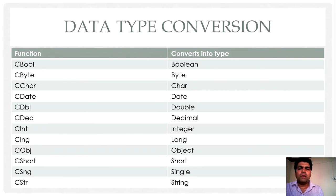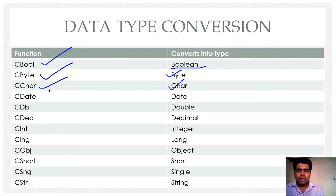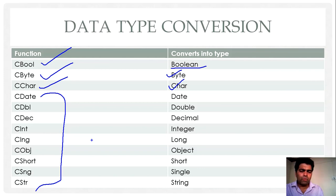There are many functions available in VB.NET to convert one type of data into another type. CBool is a function used to convert any other data type into Boolean. CByte converts any type into byte type. CChar is used to convert any data type to character type. There are many more such functions used for explicit type conversion, while implicit type conversion is automatically performed by the VB.NET compiler.